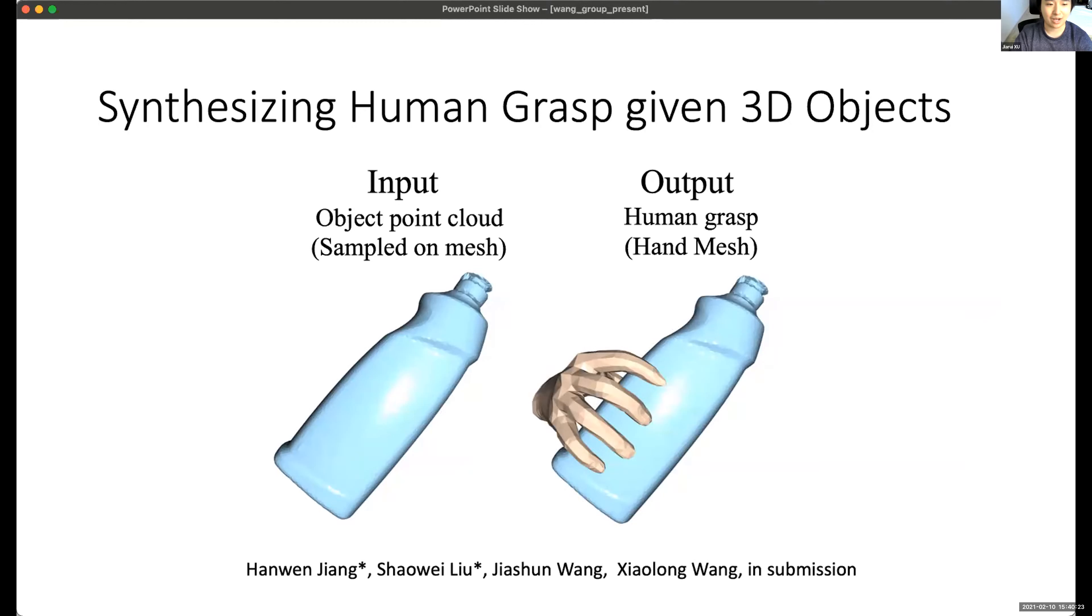And here is another synthesis. It's about the synthesis of grasps. By grasps, it means given an object pose, how should we grab the object to make the object to not fall on the ground. So for different shapes of the object, we may have to generate different shapes of the hand pose to grab the object. And the input is object point cloud sampled on the mesh and output is a human hand mesh.